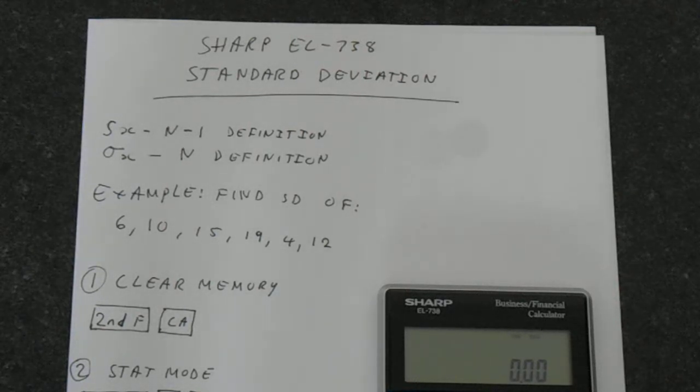First thing we need to understand is what the symbols actually mean. You've got Sx, which is your standard deviation based on the n minus 1 definition. You've got n minus 1 on the denominator. And then you've got sigma x, which is the n definition. So you're dividing by n instead of n minus 1. And they will give slightly different answers, obviously.